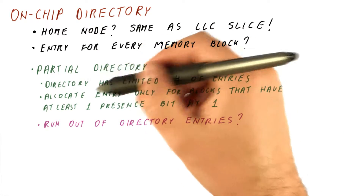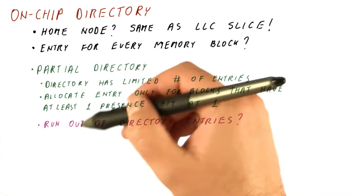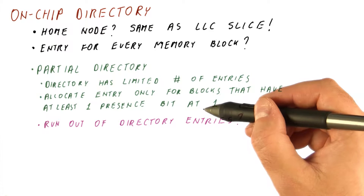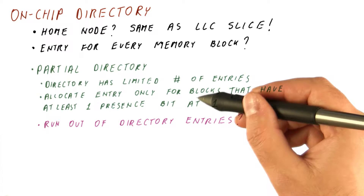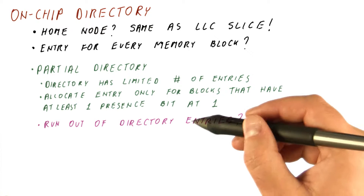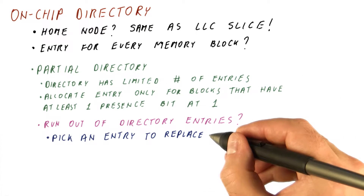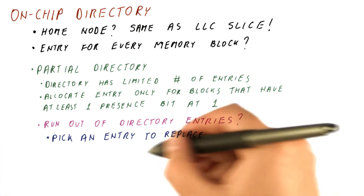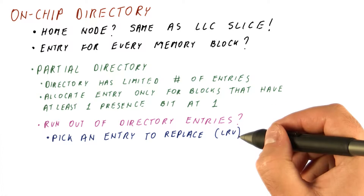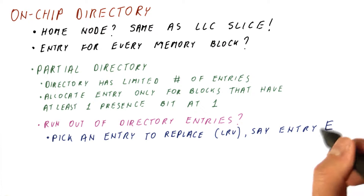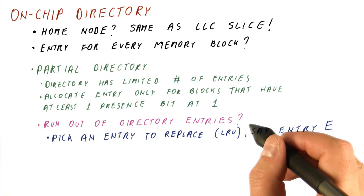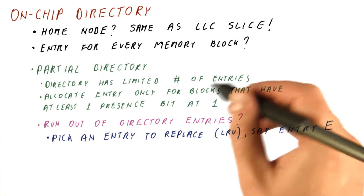In a partial directory, we can run out of directory entries. So if we need to allocate a new entry because a block is being sent to a level one and level two cache, and we need to mark where it's present, the question is what do we do in our directory? The answer is we pick an entry to replace, using some sort of LRU algorithm. Let's call that entry E — that is the entry we are replacing, not the new entry we are putting in.